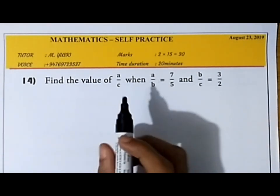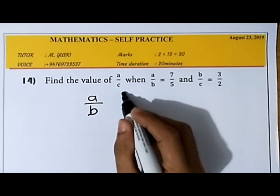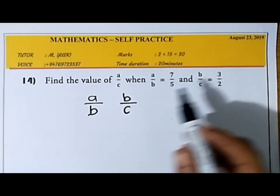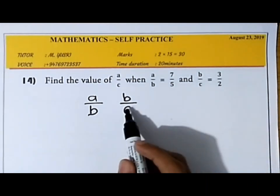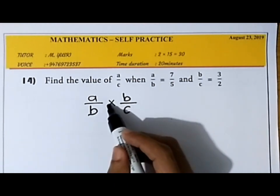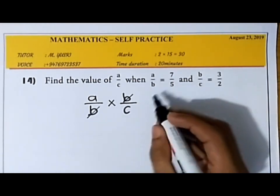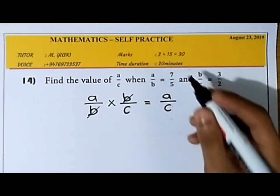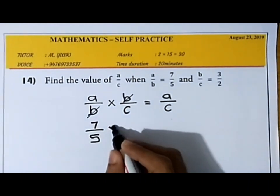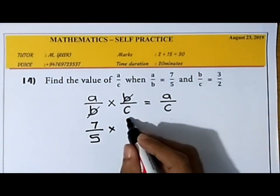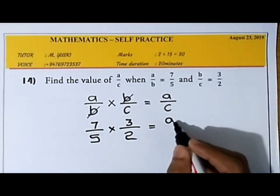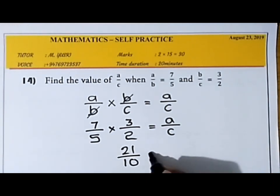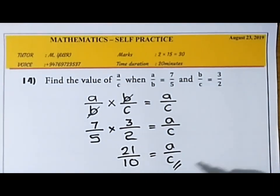Find the value of a/c, given a/b = 7/5 and b/c = 3/2. Multiplying a/b × b/c cancels b, leaving a/c. So a/c = (7/5) × (3/2). Multiplying: 7 × 3 = 21 and 5 × 2 = 10. Therefore a/c = 21/10.